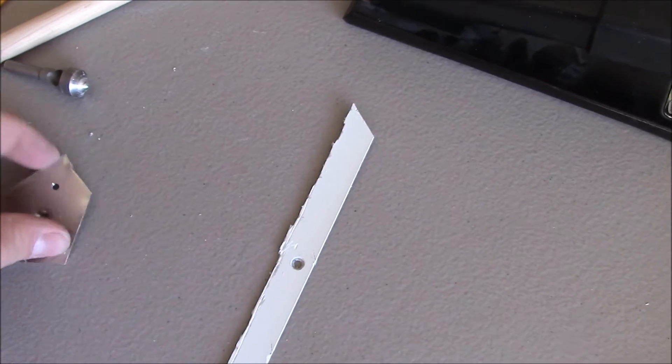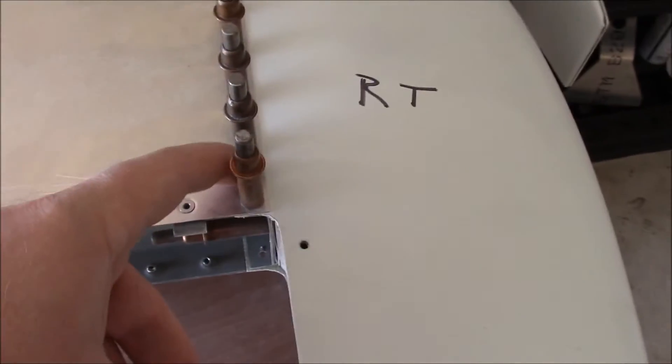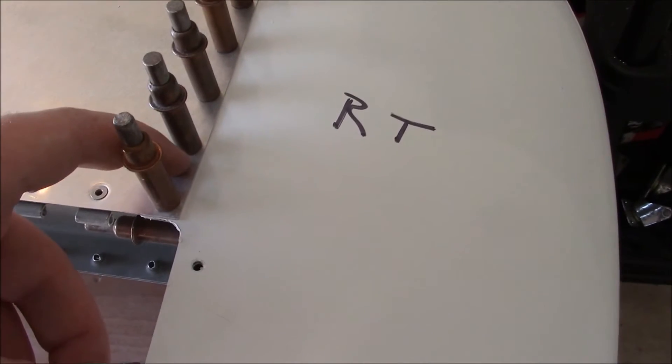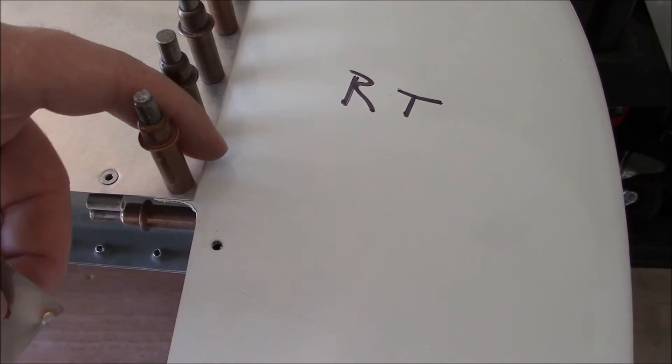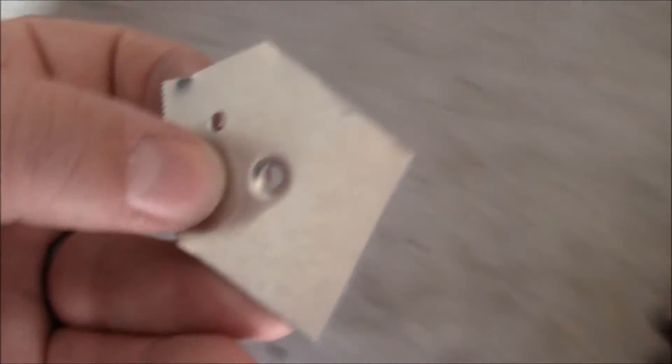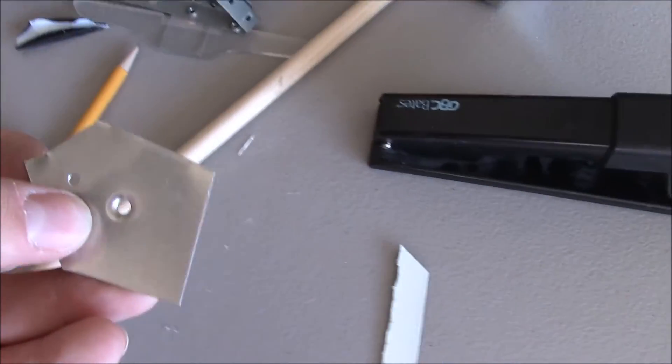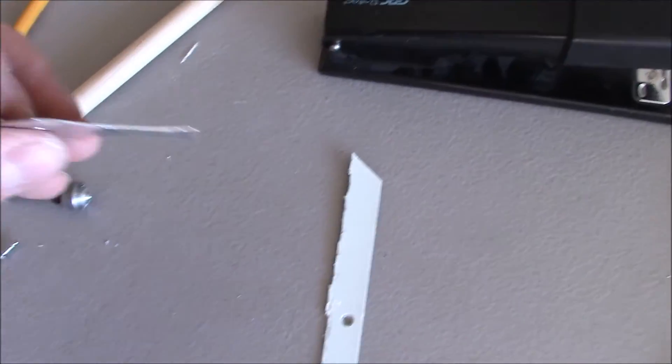The other thing I wanted to check out was the tops of my thin metal part is going to be countersunk, dimple dyed, and that will go into the countersunk part of the fiberglass. So I took a piece and I dimple dyed it of the same type of metal,